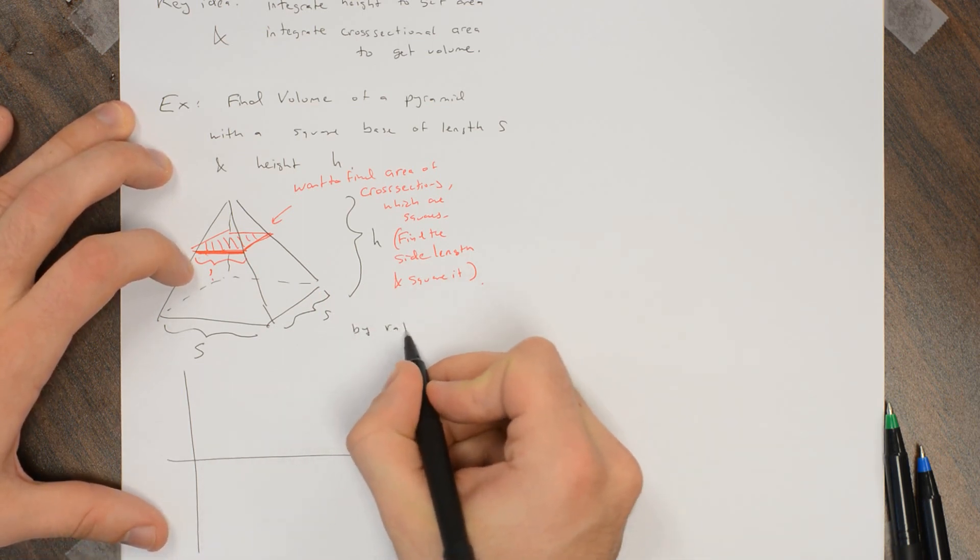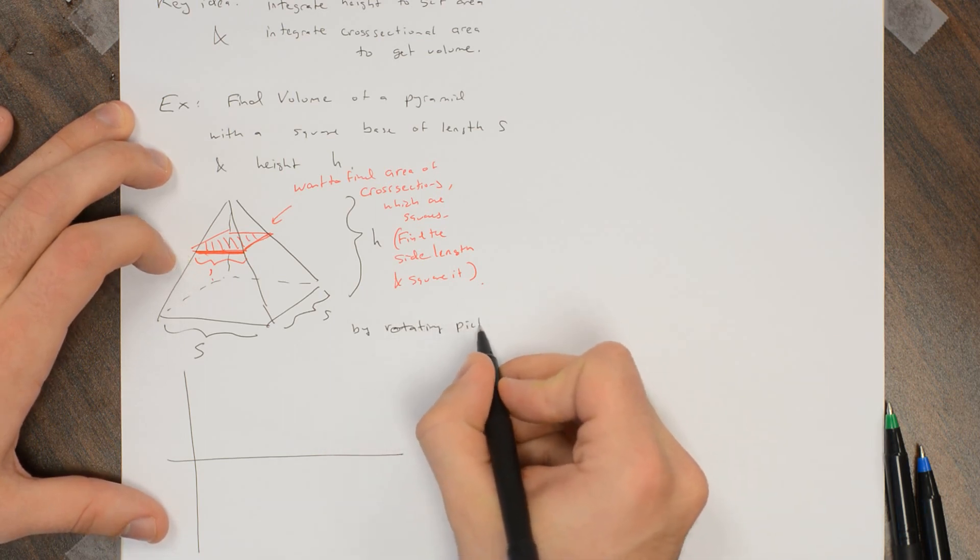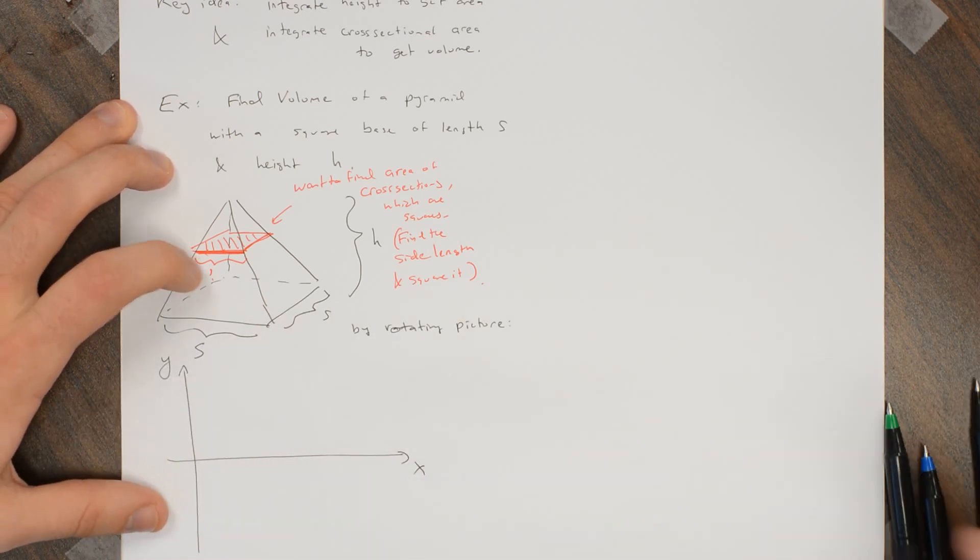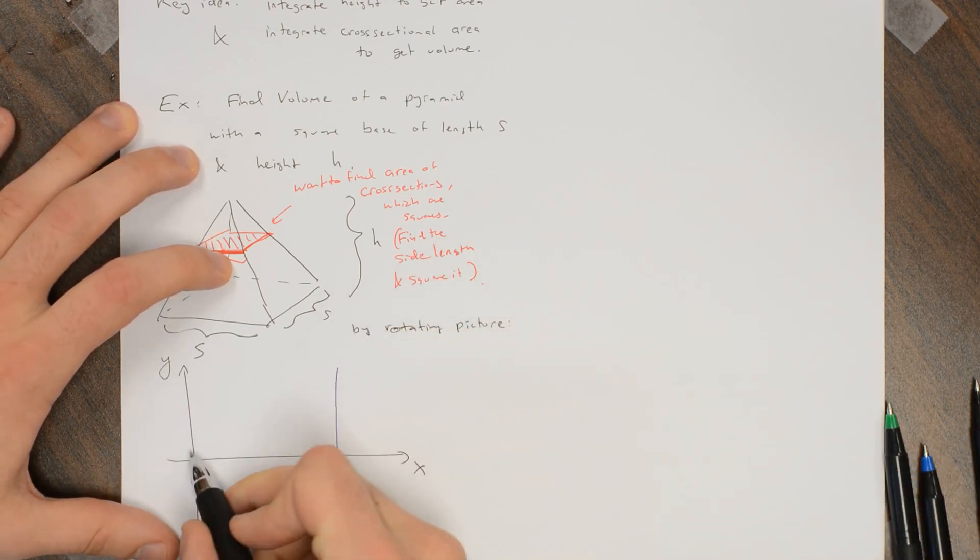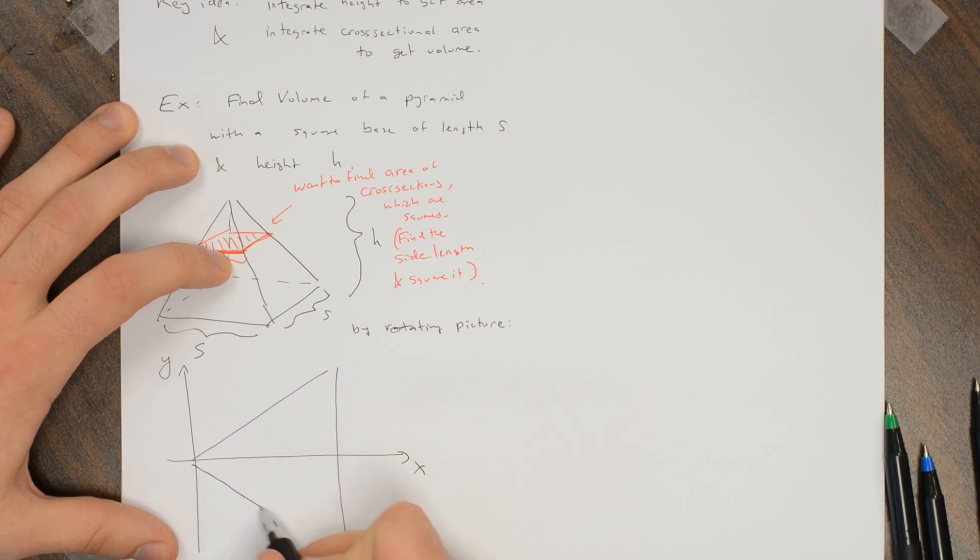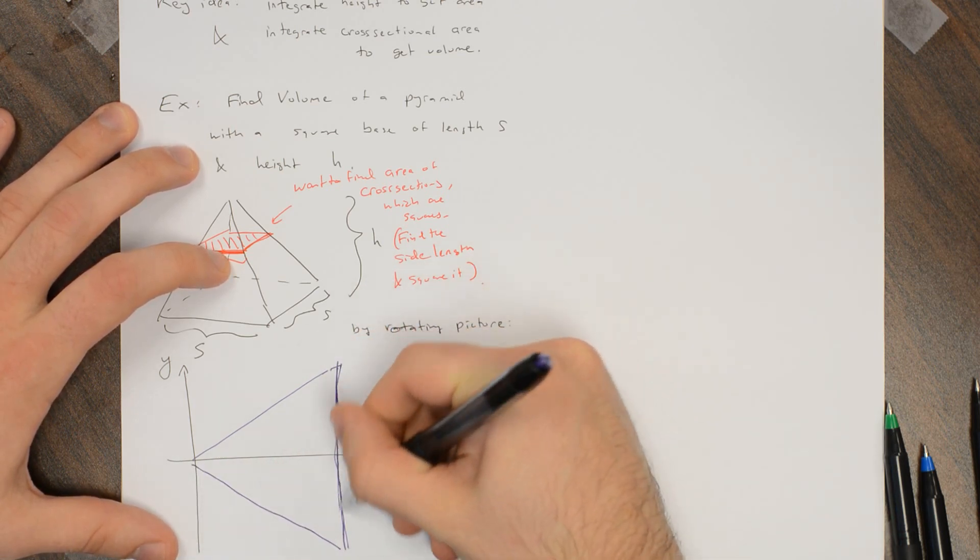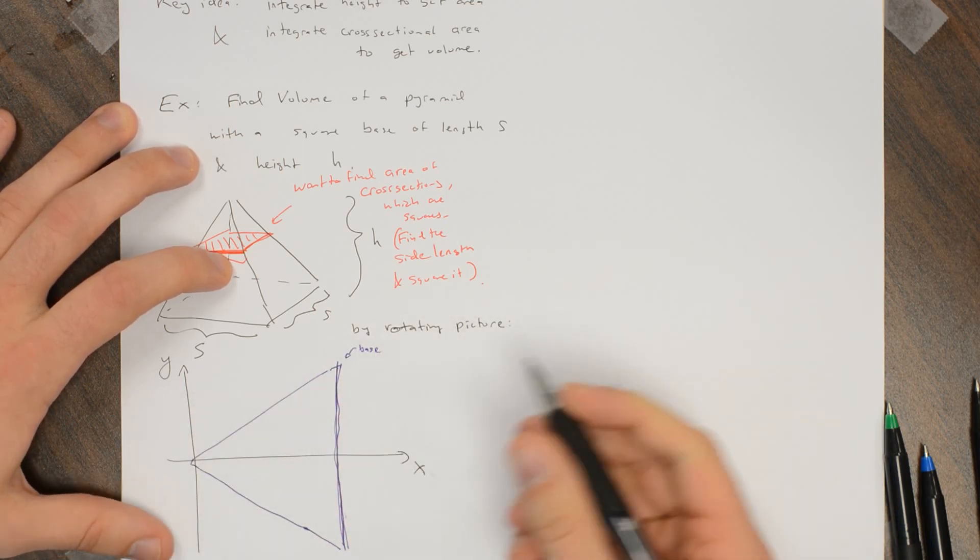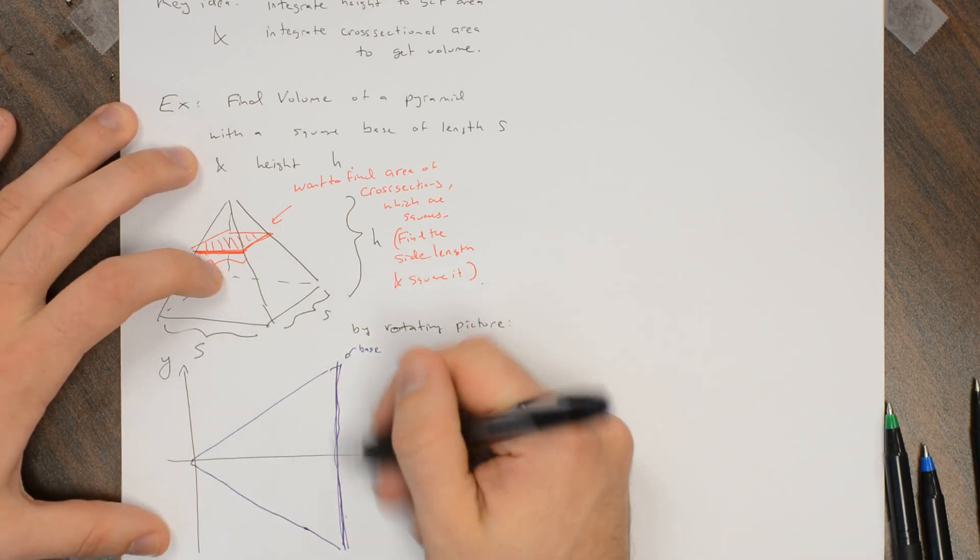So by rotating the picture, if I view it from this side, I've got my x-axis going this way and my y-axis going this way, then my pyramid looks something like this, where this is the base over here, and this is the peak, this is the base. So if I skewer it directly down the middle, this is symmetric.